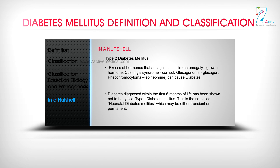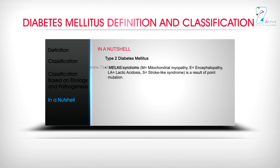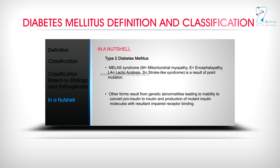Diabetes diagnosed within the first 6 months of life has been shown not to be typical type 1 diabetes mellitus — this is the so-called neonatal diabetes mellitus, which may be either transient or permanent. MELAS syndrome: M = Mitochondrial myopathy, E = Encephalopathy, LA = Lactic acidosis, S = Stroke-like syndrome — is a result of a point mutation. Other forms result from genetic abnormalities leading to inability to convert pro-insulin to insulin and production of mutant insulin molecules with resultant impaired receptor binding.